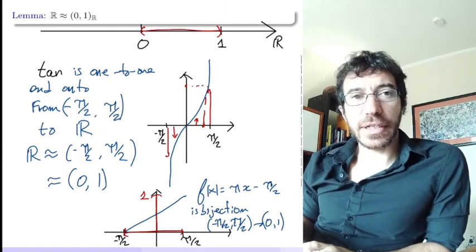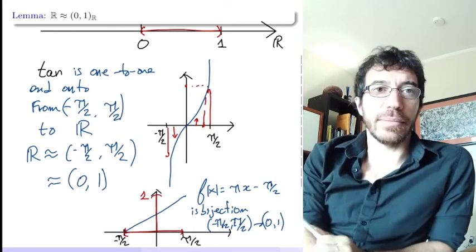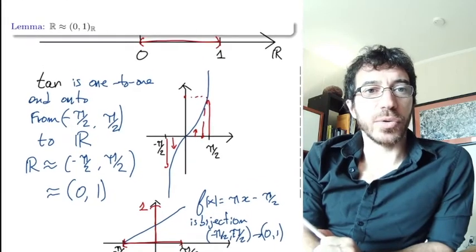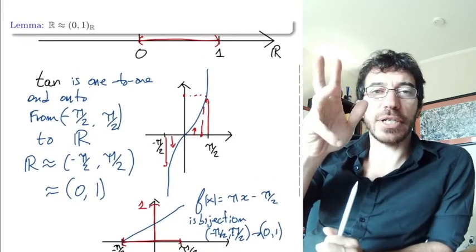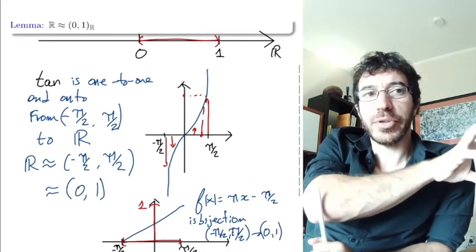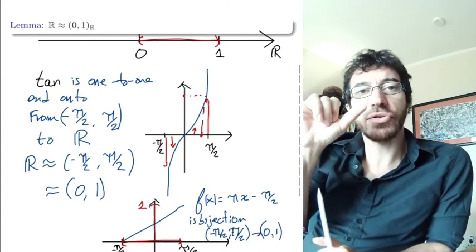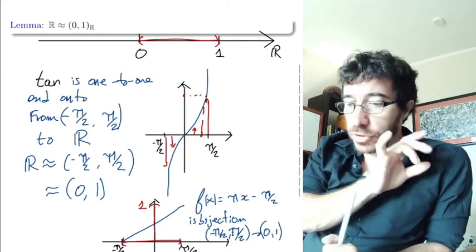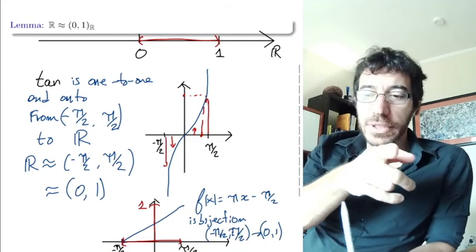So all open intervals are equinumerous to each other and to all the real numbers. We have: the integers, the rationals, and the natural numbers are all equinumerous to each other. The reals and any open interval are equinumerous to each other. What happens between these two groups? We'll see that in the next video.